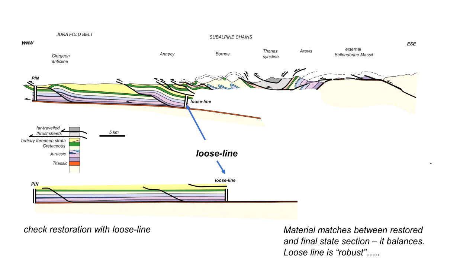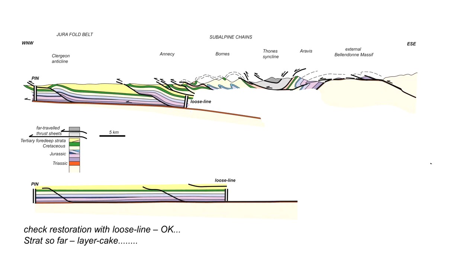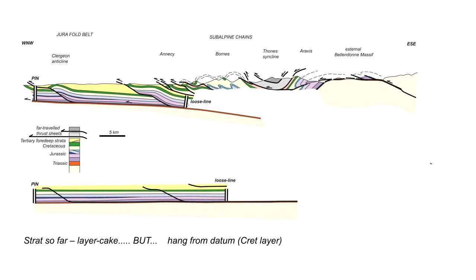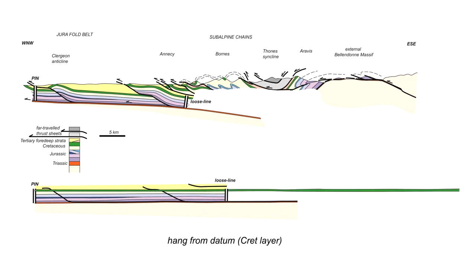With the loose line robust, we can continue further east into the interpretation. So far, the stratigraphy is layer cake — constant thickness across all thrust sheets on the restored section. However, that attribute does not apply as we go further into the subalpine chains. To handle this, we will hang our stratigraphy from a datum: the dark green Cretaceous marker. We draw that onto the template and will hang our stratigraphy from this marker as we proceed.